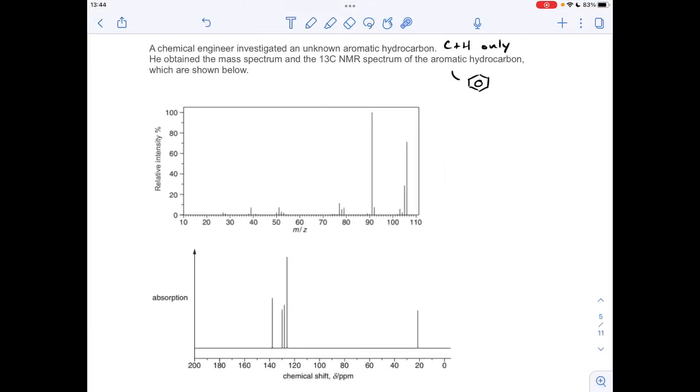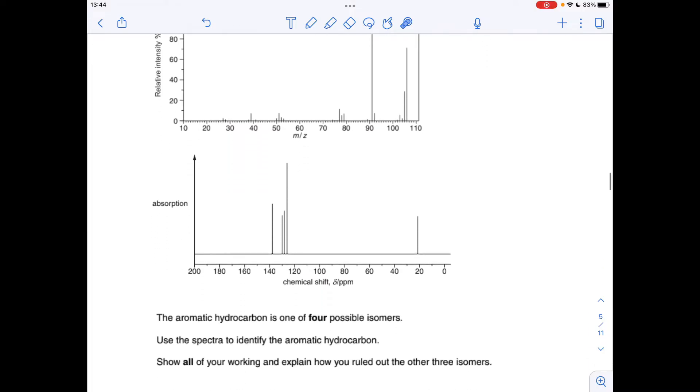Okay, so I'll make a start then. You'll see I've jotted down a couple of things that I've mentioned now. So chemical engineers investigated an unknown aromatic hydrocarbon. Hydrocarbon, carbon and hydrogen only. Aromatic contains at least one benzene ring. So we've got the mass spectrum and the carbon-13 NMR spectrum for the hydrocarbon. We've basically got to work out which of the four possible isomers it is. And we've also got to rule out the other three.